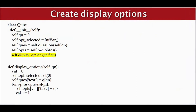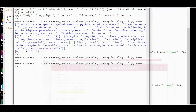Now it's time to display all the options. I have defined a function called display_options which is called from the constructor. In display_options, a variable value is initialized to zero and the opt_selector variable is set to zero, meaning nothing is selected in the radio button by default. The label text is set to q[qn], so the correct question is shown. All four options are displayed using a for loop. On running this, the options are also displayed correctly.